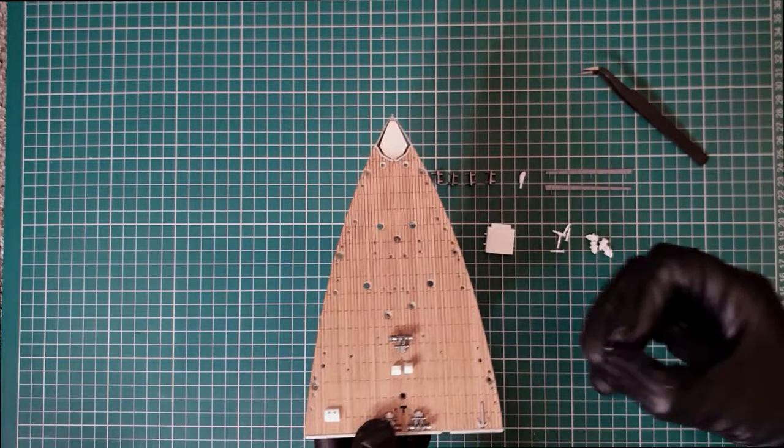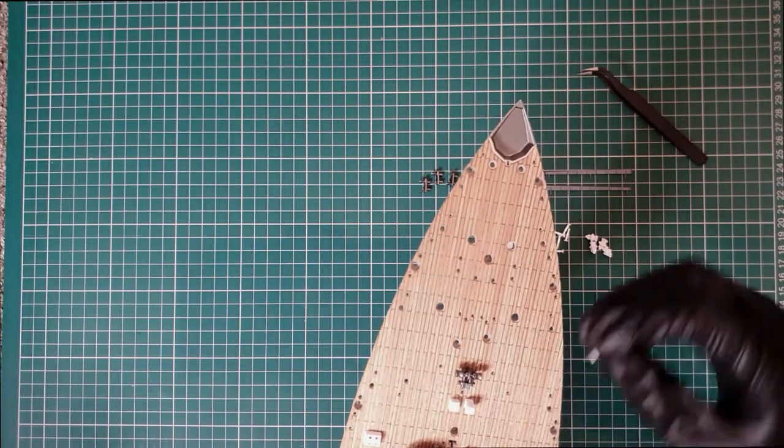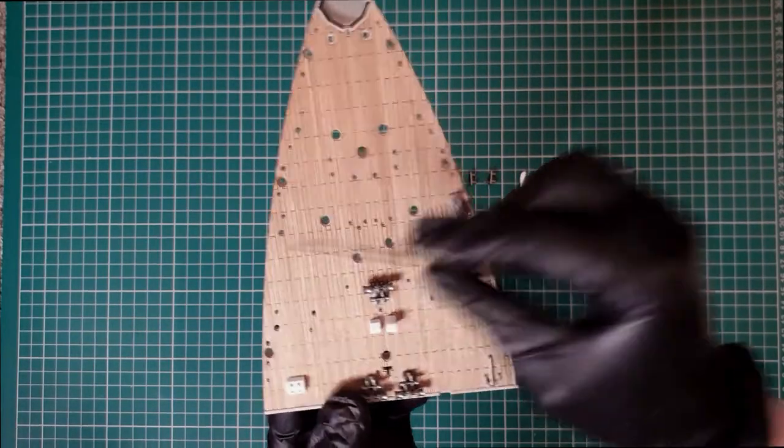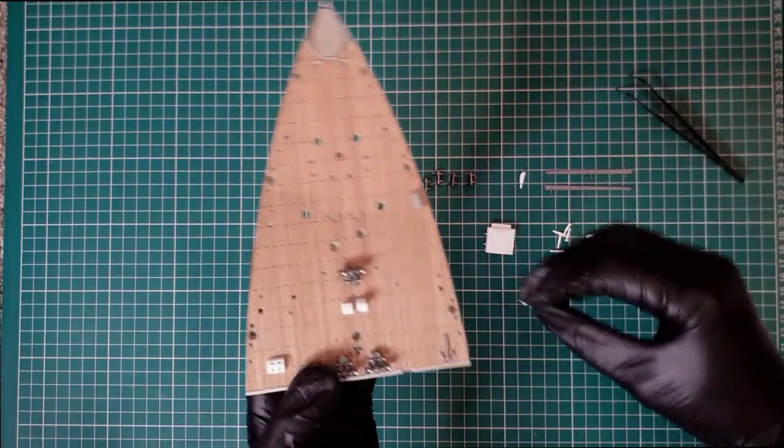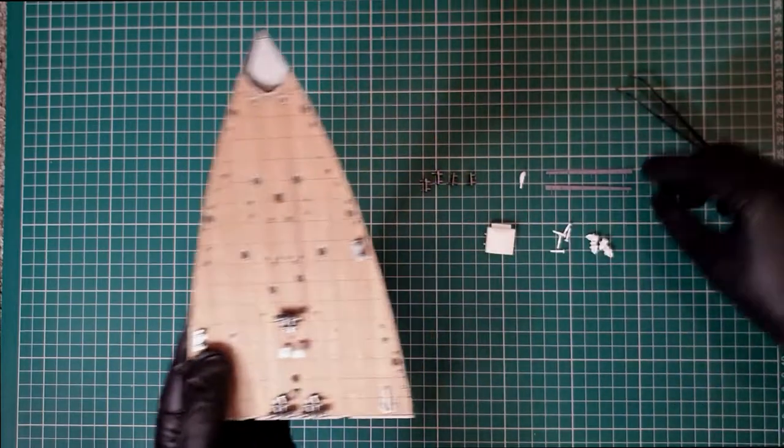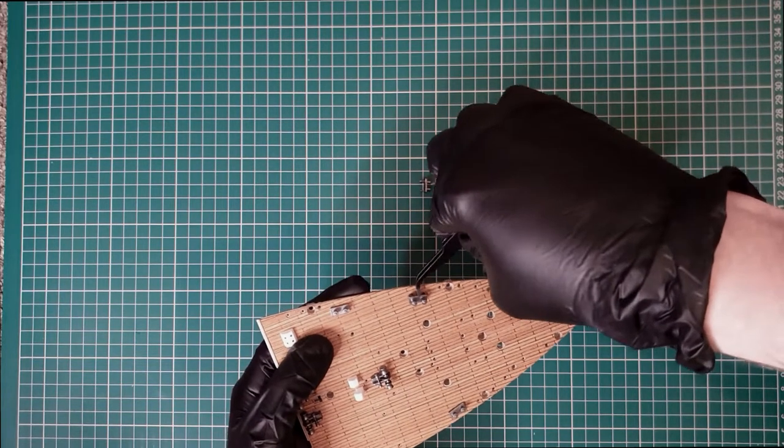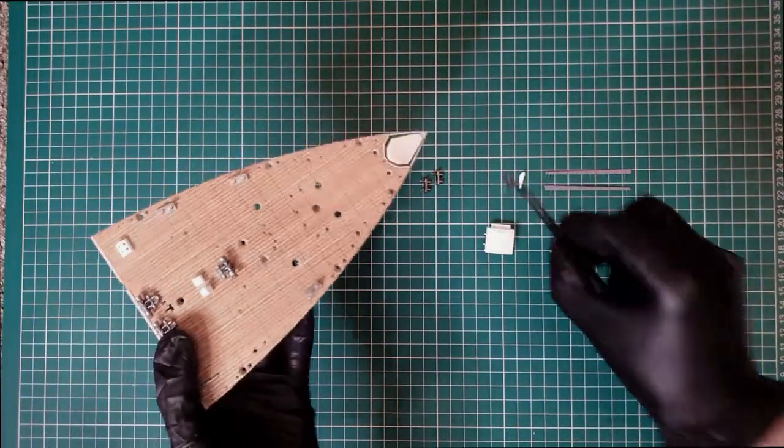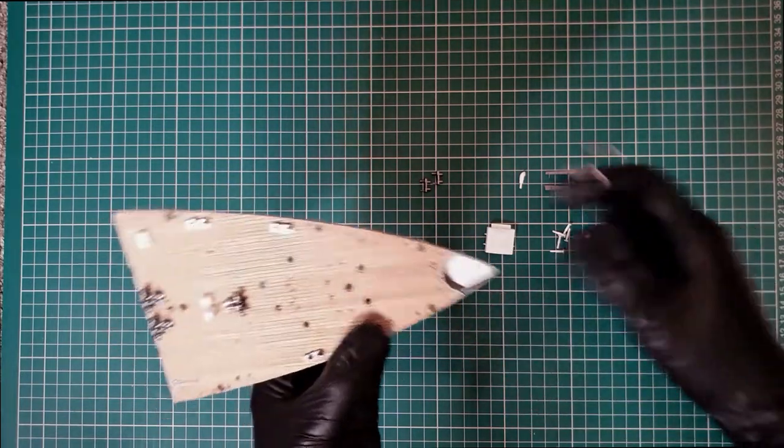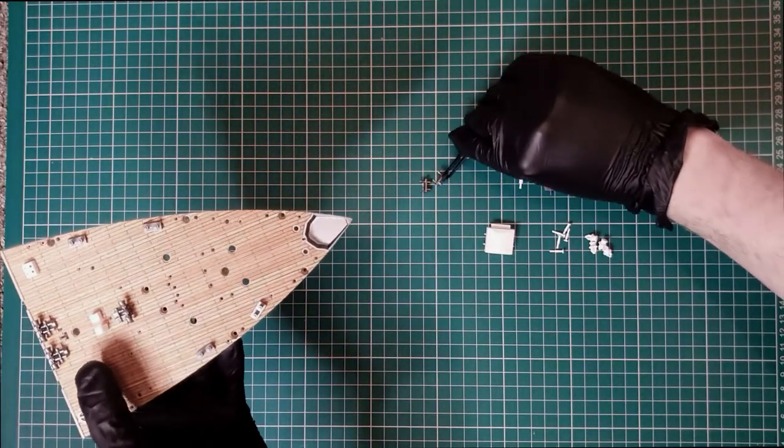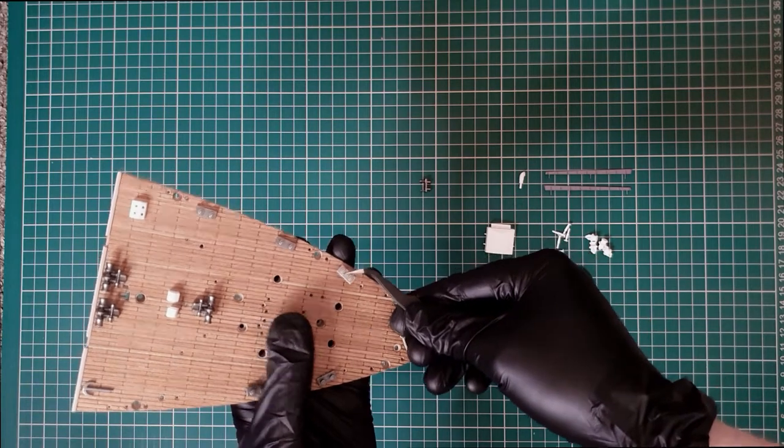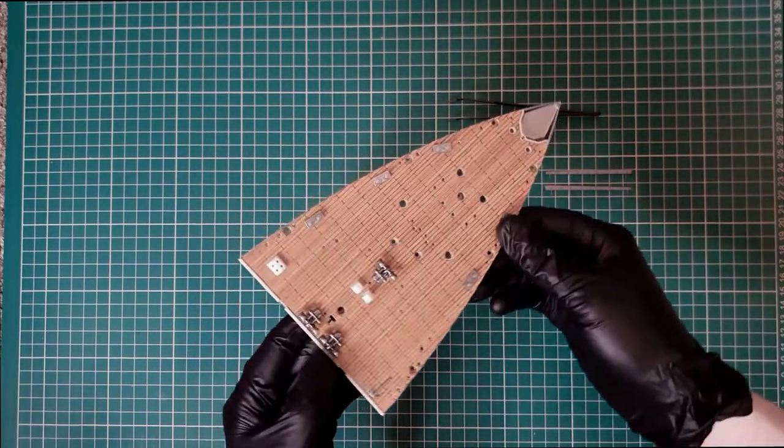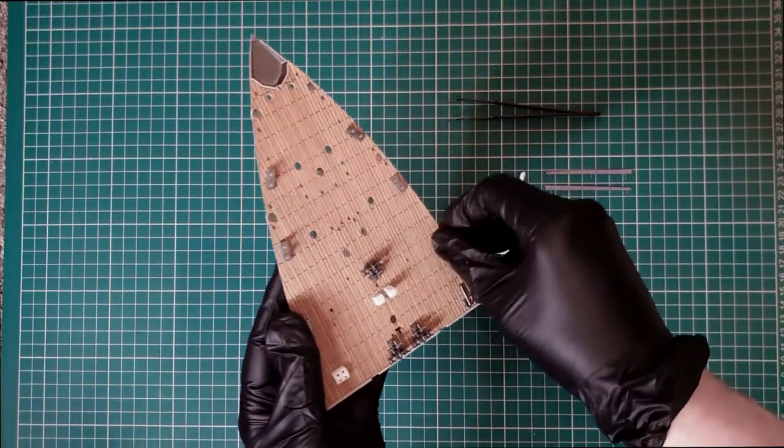We're going to put on these little bollards now. Again, these are also bigger and smaller on each side, so just going to clip these in, again matching the bigger hole and small hole.